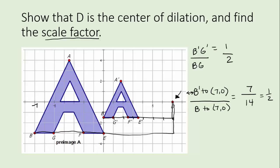If D is truly the center of dilation, the vertical distances should also be in proportion. From B prime it's one and a half units, and from B straight up to the x-axis it's three. Dividing both by 1.5 gives one half — the same scale factor. Since the scale factor comes out the same everywhere, that also shows that D must be the center of dilation. You could show it for any of the other points. That is a quick explanation of scale factors and coordinates where the center is not zero, zero — you may want to watch it again, as this can be pretty confusing the first time.